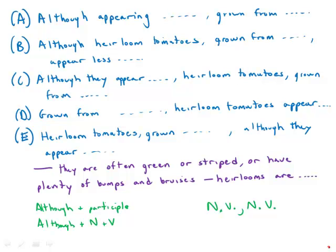First of all, if we have a subordinate conjunction like although, we have two structures here in the sentence: although followed by a participle, and although followed by a noun and a verb.